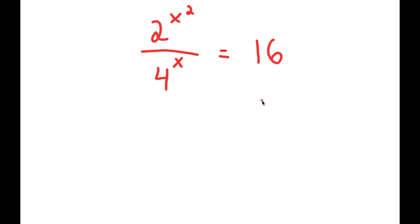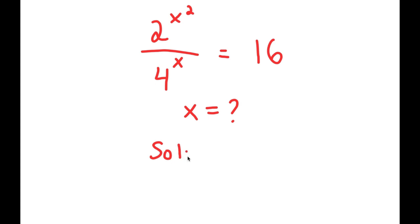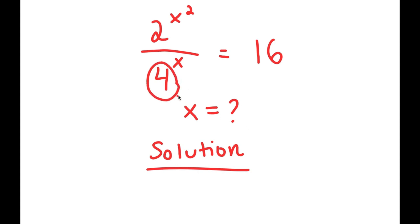In this equation, I have 2 to the power of x squared over 4 to the power of x is equal to 16. I want to find the value of x. For my solution, I'm going to start by rewriting 4 as 2 squared and 16 as 2 to the power of 4, so that all my terms are in power of 2.